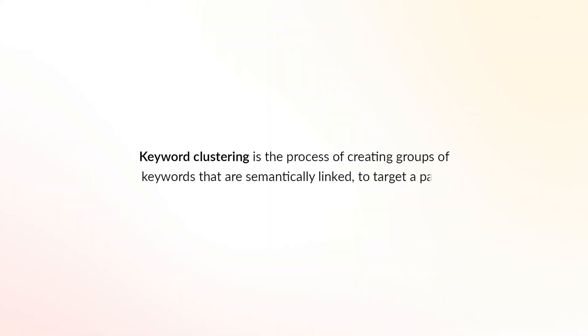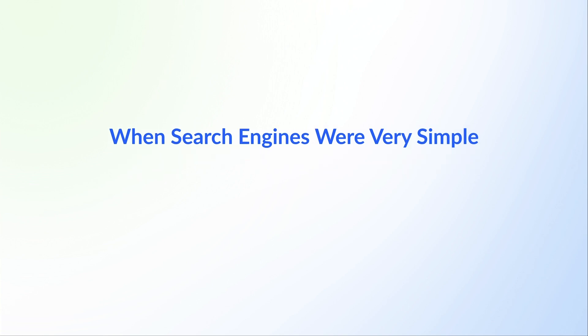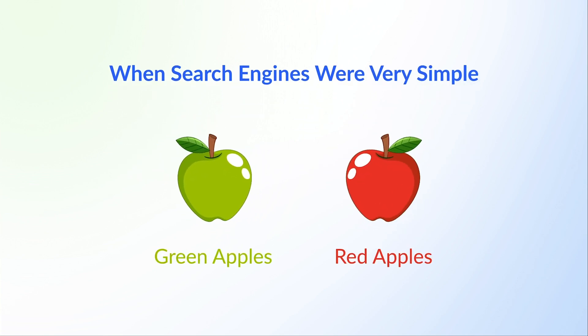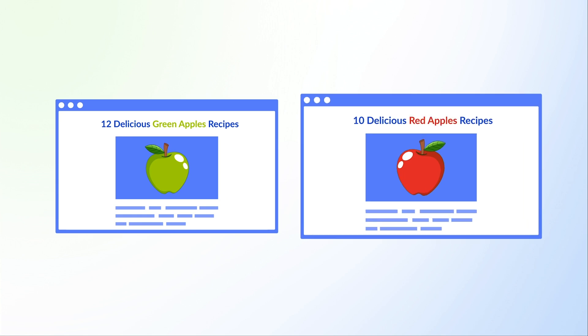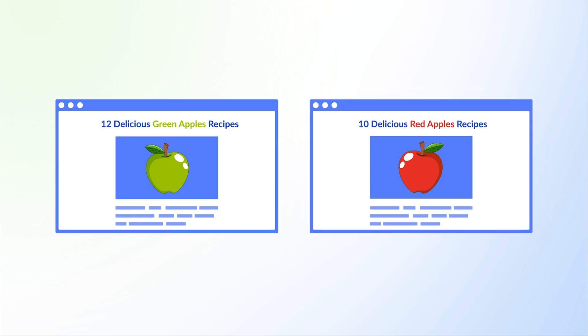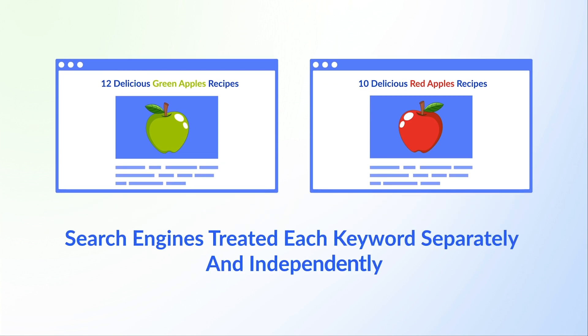Keyword clustering is the process of creating groups of keywords that are semantically linked to target a page. Back in the early days of the web, when search engines were very simple, you would target the keywords 'green apples' and 'red apples' separately. It was common practice to create two pages of almost identical content, one targeting green apples and the other red apples. It was necessary if you wanted to rank for both keywords because search engines treated each keyword separately and independently. That's where the legacy term 'keyword' comes from — it really was about one keyword at a time.